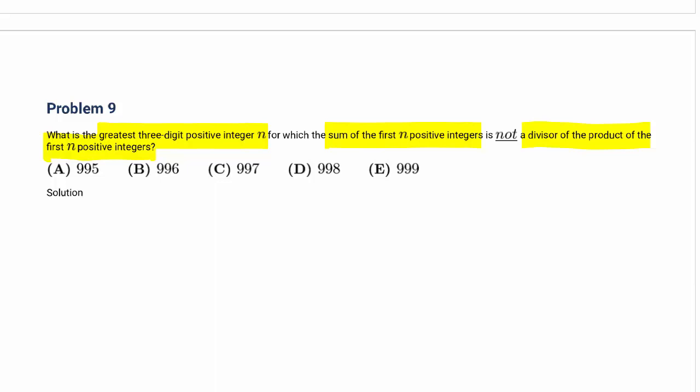Divisor means when you have a number like 12 divided by 4, this is 3 with no remainder. So the first n positive integers product is 1 times 2 times 3 times n, which is n factorial. The sum of all numbers is (1 + n) times n divided by 2. If this is an integer, this number is a divisor. If this is not an integer, this number is not a divisor.